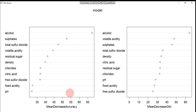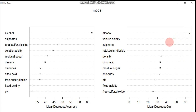For the mean decrease in Gini impurity, alcohol is again highest, followed by volatile acidity and sulfates. To visualize this, use the varImpPlot function on the model. The plot shows for mean decrease accuracy: alcohol first, then sulfates, then total sulfur dioxide, with pH and fixed acidity contributing least. This is all for today's tutorial on random forest models. The code and data will be in the description box for your practice.